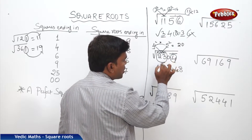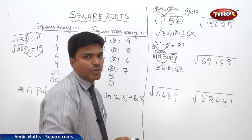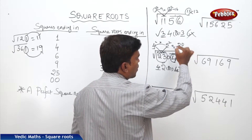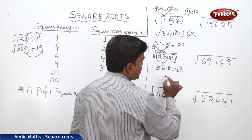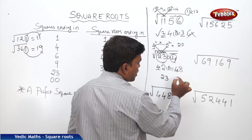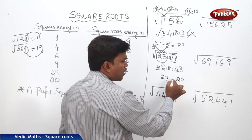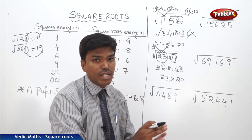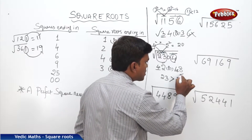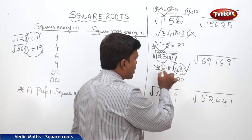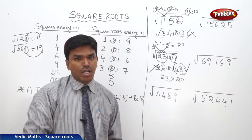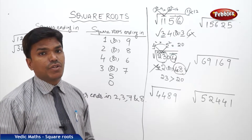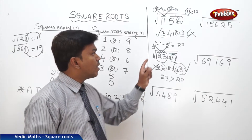Now compare the second partition number 23 with the product 20. Is 23 greater than 20 or lesser than 20? It is greater than 20. If the second partition number is greater than the product, then the greater number will be your answer. So 48 is my answer, not 42. If it were lesser than the product, then the lesser value would be the answer.